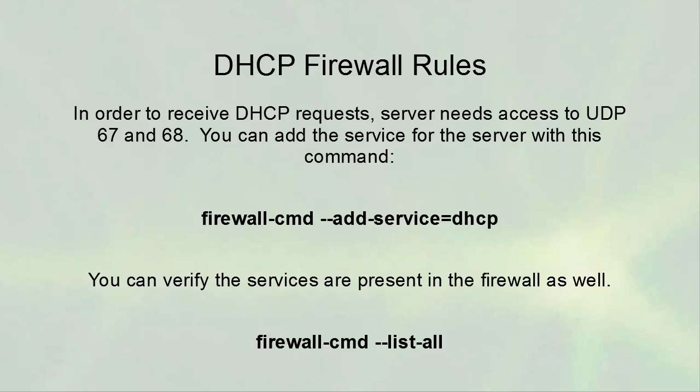Having the service running doesn't guarantee clients can reach it — you also need to make sure the firewall allows traffic through. DHCP sends and receives on different port numbers so both need to be open. Use 'firewall-cmd --add-service=dhcp' to add the DHCP service to your firewall. To make it permanent, add '--permanent' to the end of the command.